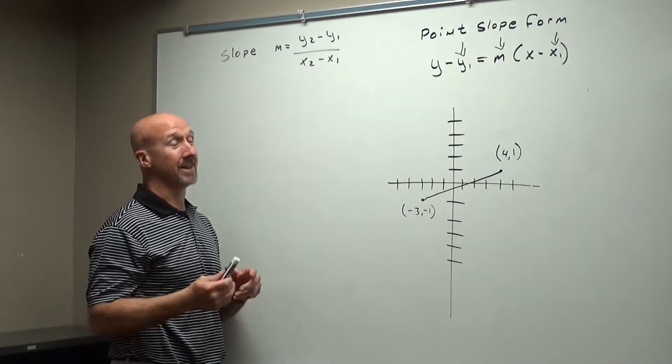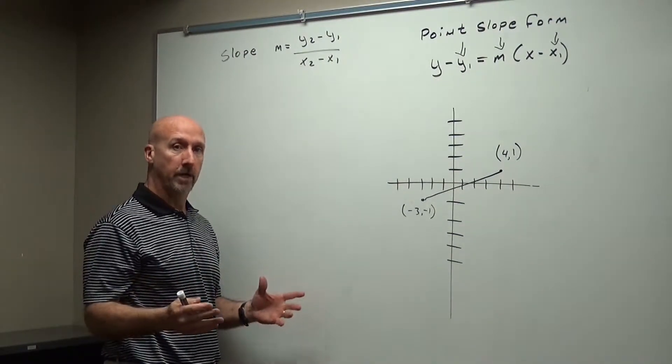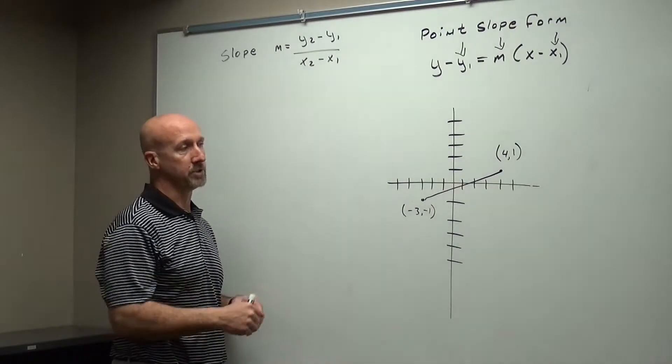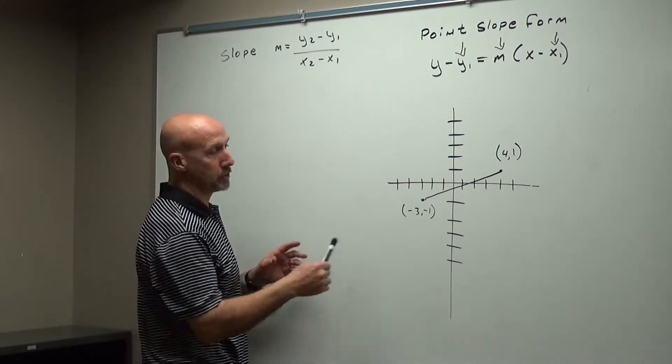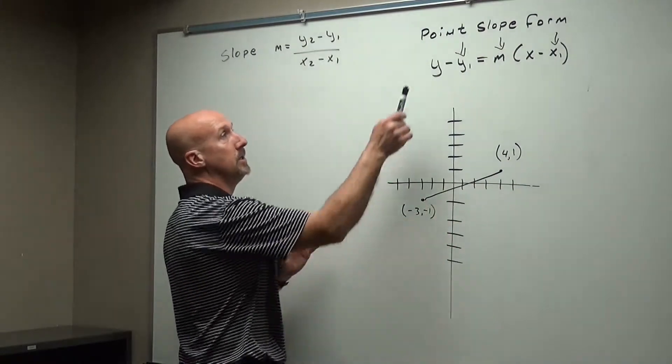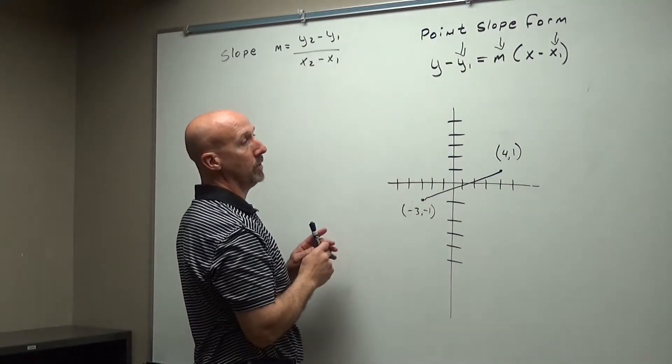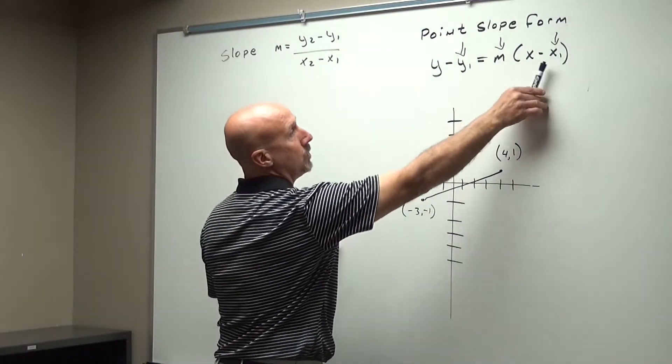We're going to do the same thing, but last time we got all whole numbers. The last assignment, all of them were whole numbers. This assignment, we're going to get fractions, so I want to show you how to get fractions. So again, there's only three things we need to write an equation in point-slope form, and that's y1, x1, and m.